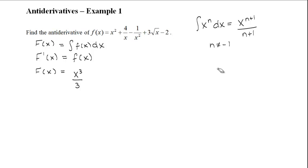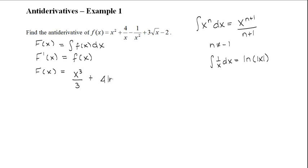We recognize that 1 over x has its own antiderivative. The antiderivative of 1 over x is equal to ln of the absolute value of x. We use absolute value because you can't take the ln of a negative number. So when we take the antiderivative of 4 over x, we have 4 times the antiderivative of 1 over x, which gives us 4 times ln of the absolute value of x.